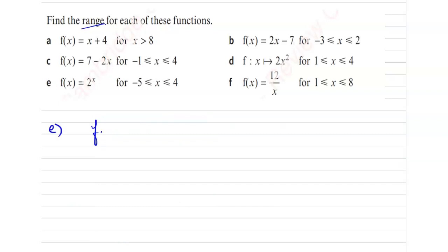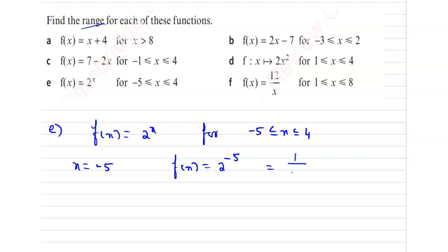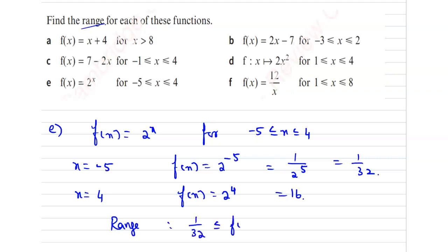Next: f of x equal to 2 to the power x for minus 5 less than or equal to x less than or equal to 4. Take x equal to minus 5. So, f of x is 2 to the power minus 5, which is 1 by 2 to the power 5, so 1 by 32. And the upper limit given is x equal to 4. So, f of x is 2 to the power 4, which is 16. Therefore, the range is 1 by 32 less than or equal to f of x less than or equal to 16.